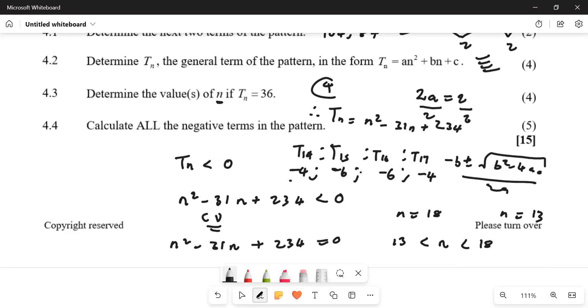So it's minus 4, minus 6, minus 6, minus 4. So meaning that T14 and T17 give minus 4, and T15 and T16. So if you don't have this part, it means you're missing marks. Yeah, yeah.